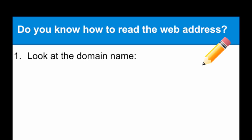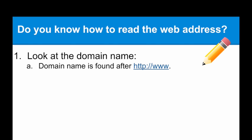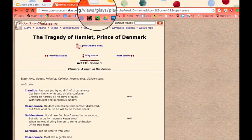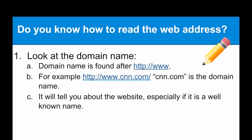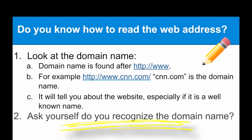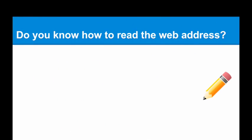First of all, do you know how to read a web address? The web address can be found at the top of the screen when you're doing a search. You need to look at the domain name. A domain name is found after the initial web address — HTTP colon backslash backslash WWW dot — then comes the domain name. For example, CNN.com is the domain name. This is going to tell you all about the website, especially if it's a well-known name. Understanding the web address will help you before you even open the page.